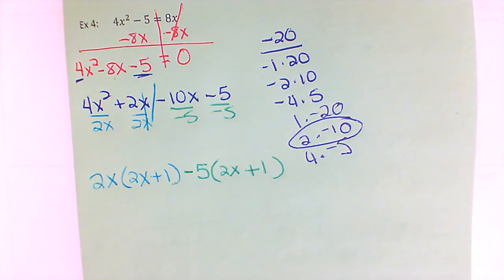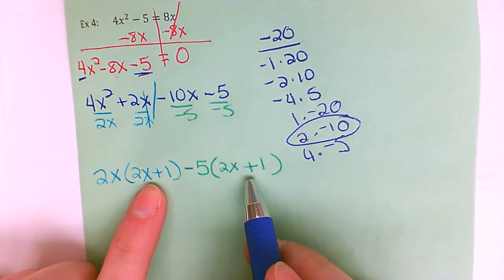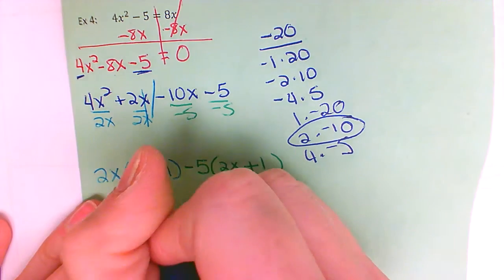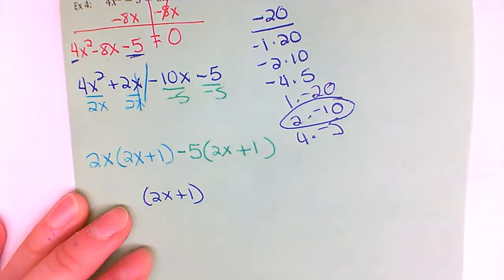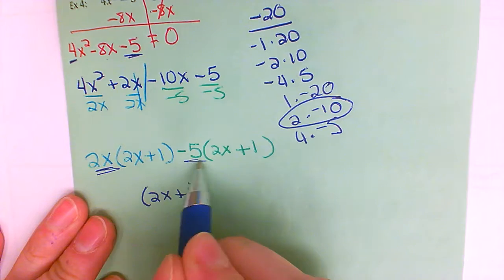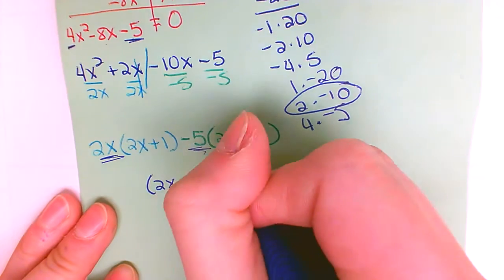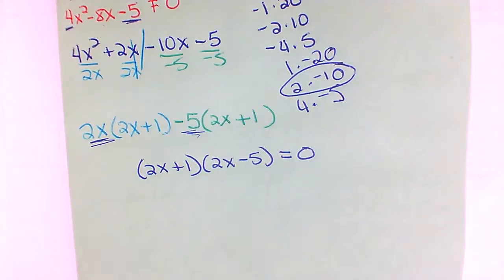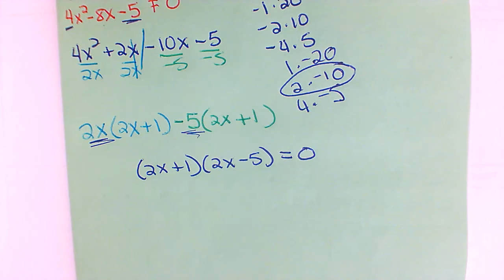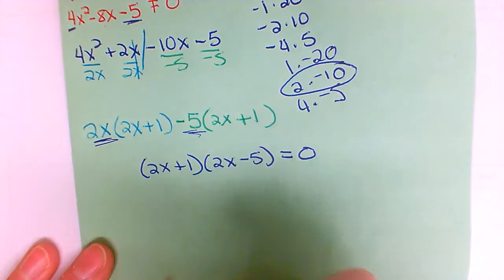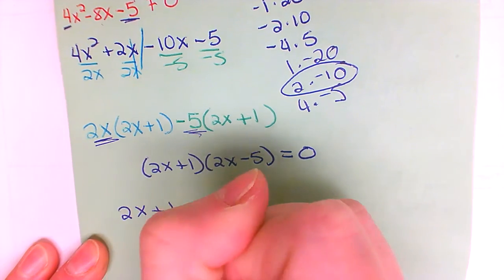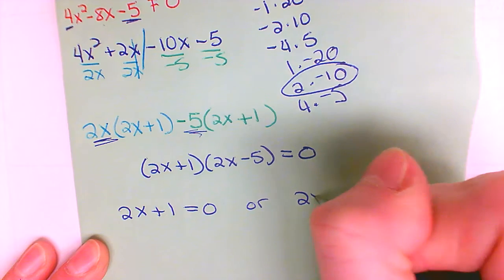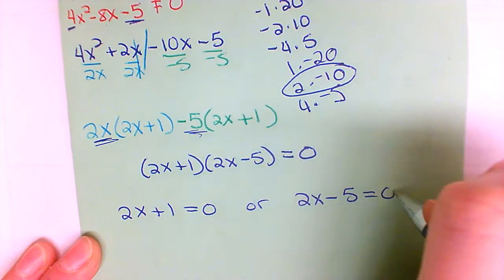I do have the exact same thing in both sets of parentheses, so that's half of my answer — the two x plus one part. The outside, two x minus five, is going to be my other set of parentheses. Don't forget this thing was set equal to zero. Now that I have my quadratic factored, I'm going to take each set of parentheses: two x plus one equals zero, or two x minus five equals zero.